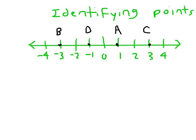Oftentimes when working with integers, you will be asked to identify the integer for a point on the number line. Looking at this number line: A is at 1, B is at negative 3, C is at 3, and D is at negative 1. That looks straightforward, but they will start adjusting these values where they do not label the whole thing nicely for you, or they might change the interval.